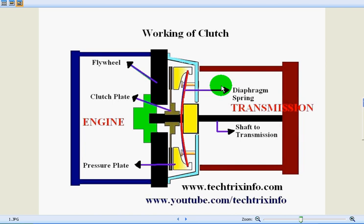Today we'll be studying about the working of a clutch. On the screen you can see the circuit of a clutch. We'll be discussing the purpose of a clutch, the parts of a clutch, and how a clutch works. The powertrain of an automobile carries power from the engine through the transmission towards the rear axle, driving the rear wheels. The clutch is placed in between the engine and the transmission.